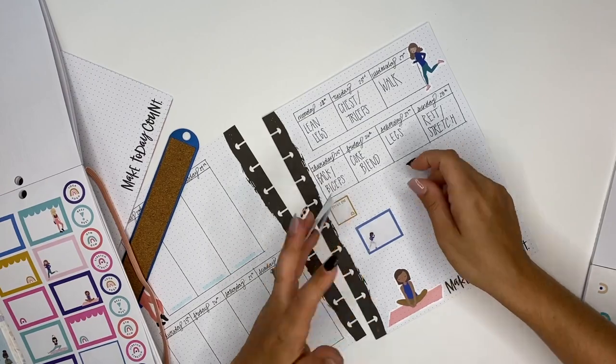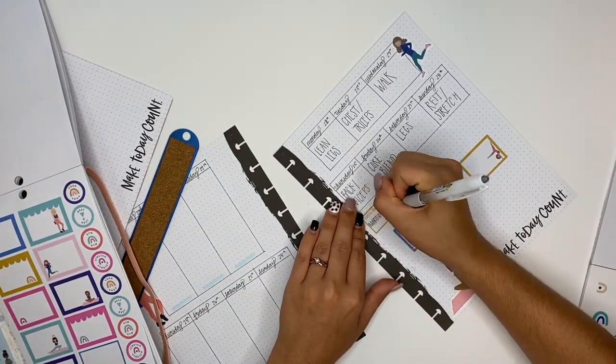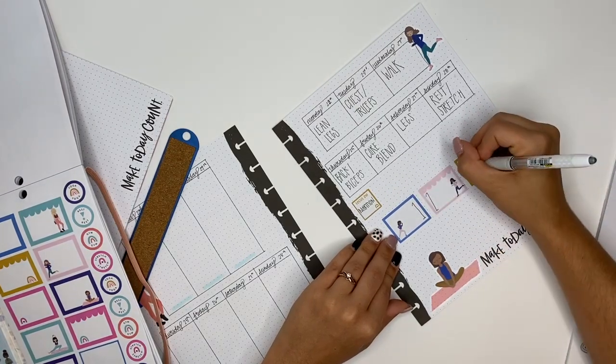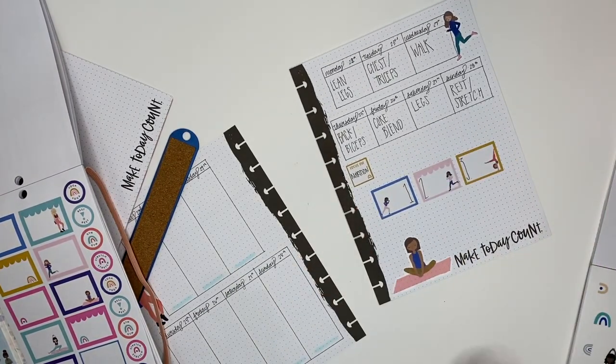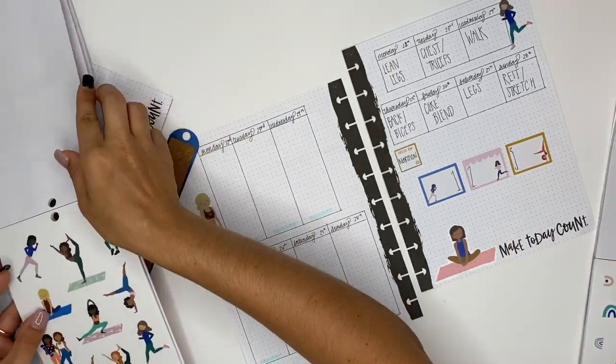And then those three bigger boxes is where I will put up to three goals, and I just numbered them on the side one, two, three, that way I can set my three goals for the week. And then now we're just going to finish decorating it some more with cute little stickers.